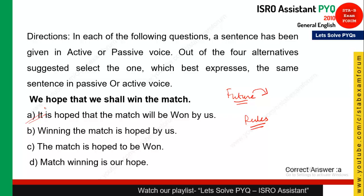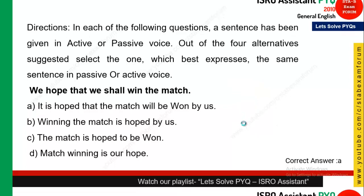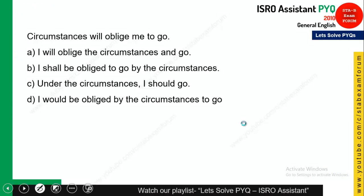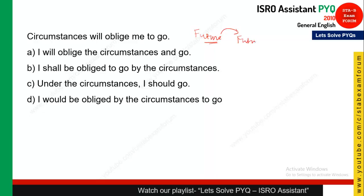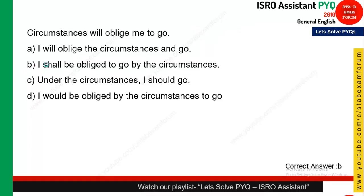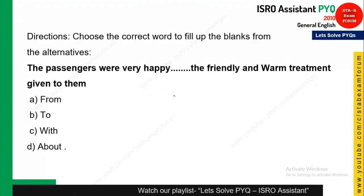For these types of questions you need to see the rules — that is the only thing you should remember. The next question is similar, again from the future tense. The answer should be in future passive form. Out of the four options, 'I shall be obliged to go by circumstances' seems to be the correct one, and it is the correct answer.